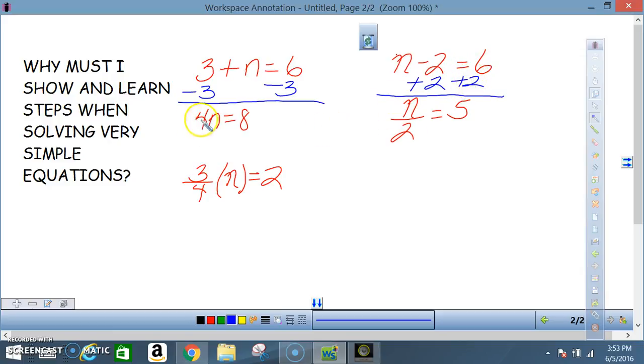Here, 4 times what, or 4 times n, would give me 8? We know that the answer is going to be 2. That's not what they're looking for. They're looking for the technique. 4 times what would give me 8? Divide both sides by 4, divide both sides by 4, and I end up with n equaling 2.